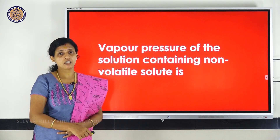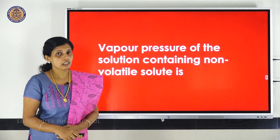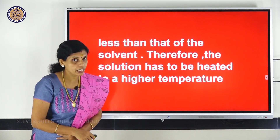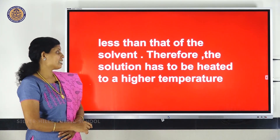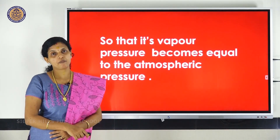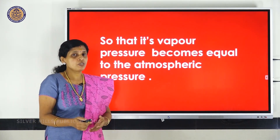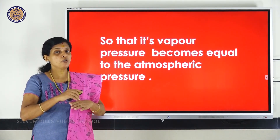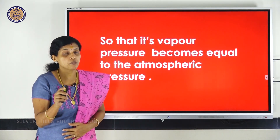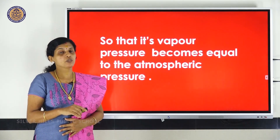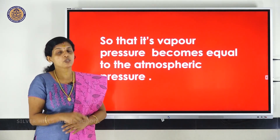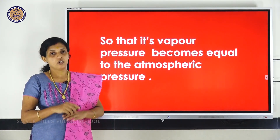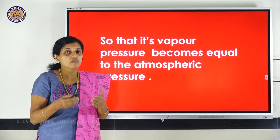When we consider a solution, it contains a non-volatile solute and a solvent. The vapor pressure of a solution contains a non-volatile solute. Since the solute is non-volatile, it will occupy the surface of the solution. So the rate of evaporation of pure solvent molecules decreases, meaning the number of molecules in the vapor form decreases.